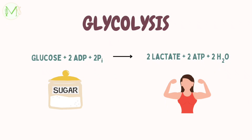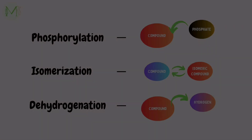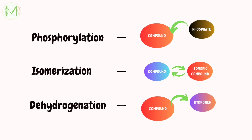But many steps occur in between until lactate is obtained. Before knowing them all, let's get familiar with some basic terminologies. Phosphorylation refers to addition of a phosphate group to an organic compound. Isomerization is a process by which a compound is transformed into an isomeric form, which has the same chemical composition but different physical and chemical properties. Dehydrogenation refers to removal of hydrogen from an organic molecule.